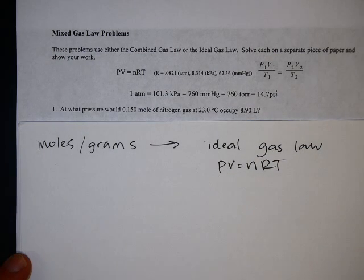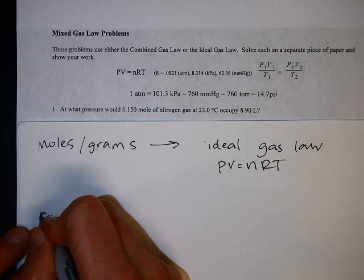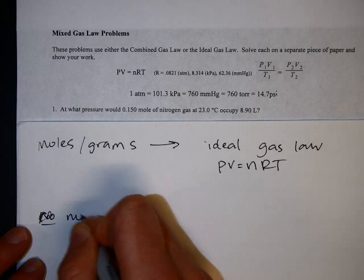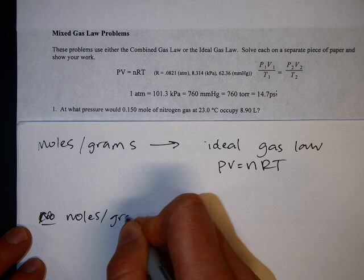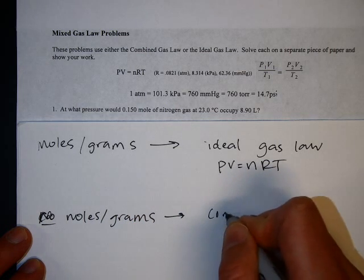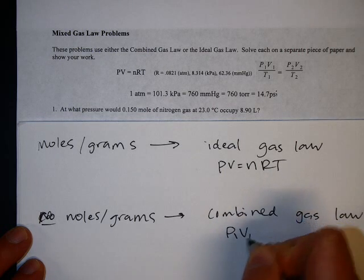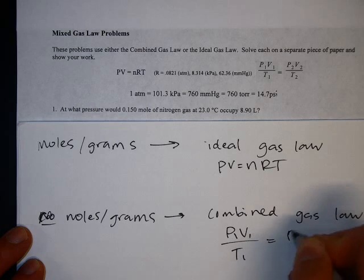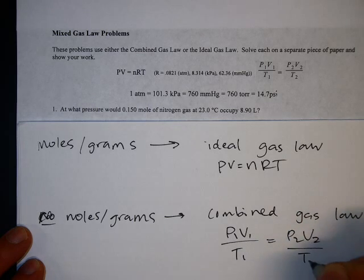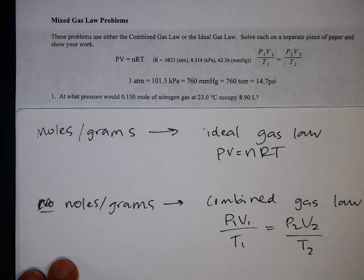If the problem does not give you moles or grams, then you're dealing with the combined gas law. No moles, no grams is the combined gas law, which is P1 times V1 over T1 equals P2 times V2 over T2.